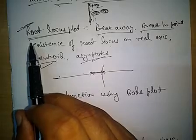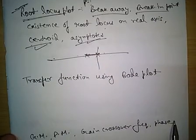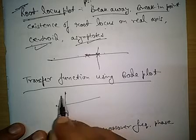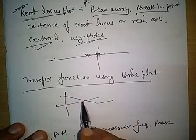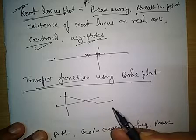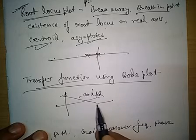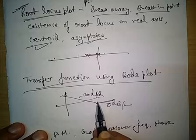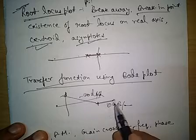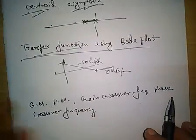Root locus plotting is important from the exam point of view because it is easy to learn and easy to verify options using root locus properties. The next topic is finding the Transfer Function from a Bode Plot. Most of the time, a Bode plot is given and we have to find the transfer function. We know that a slope of −20 dB/decade indicates a pole, and if the slope becomes 0 dB/decade at a certain point, there must be a zero.